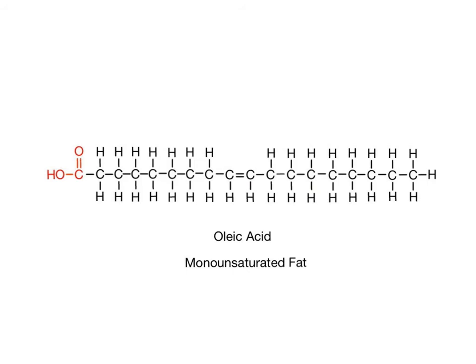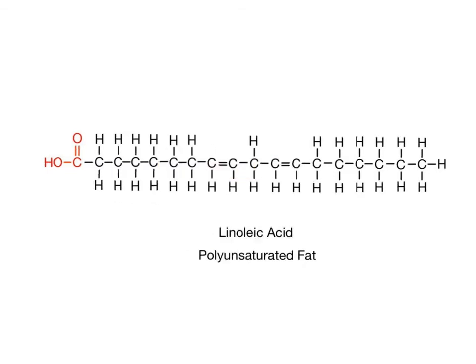We can classify unsaturated fats based on the number of double bonds they possess. Monounsaturated fats, such as oleic acid, have one double bond in their hydrocarbon chains. While polyunsaturated fats, like linoleic acid, contain more than one double bond.